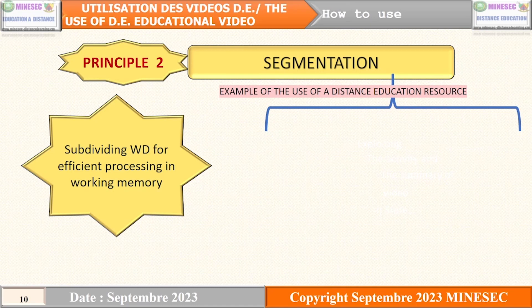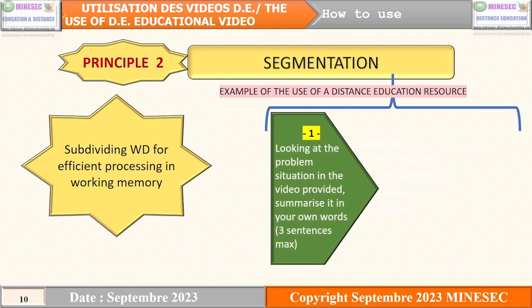The second principle is segmentation. As earlier mentioned, the working memory has a limited storage. It is therefore imperative to select the necessary information step by step. For example, the first segmentation can be at the level of a real-life situation. Looking at the problem situation in the video provided, summarize it in your own words — three sentences maximum.